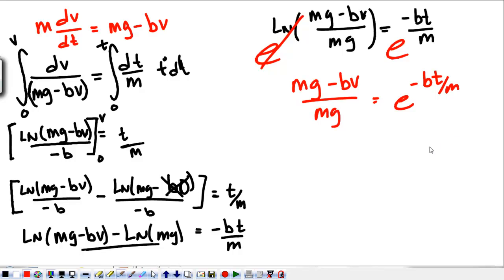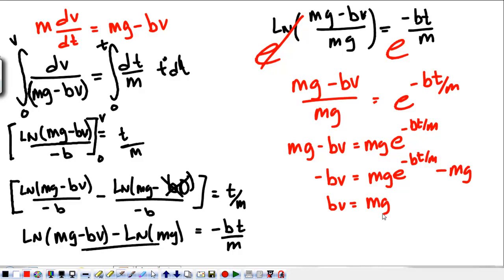I'm not done yet. Now I have to do algebra to solve for v. So, multiply both sides by mg. mg minus bv equals mg times e to the negative bt over m. Negative bv equals mg e to the negative bt over m minus mg. Swap around that negative sign. Then, bv equals, I'm going to pull an mg out, mg times 1 minus e to the negative bt over m. So complicated. The velocity comes out to mg over b times 1 minus e to the negative bt over m.